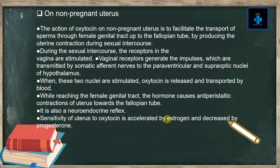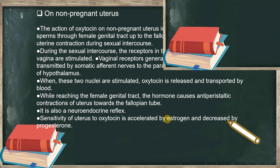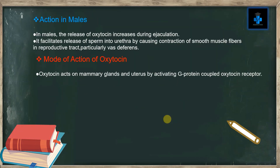The sensitivity of the uterus to oxytocin is increased by estrogen and decreased by progesterone. In males, the release of oxytocin increases during ejaculation. It facilitates the release of sperm into the urethra by causing contraction of smooth muscle fibers in the reproductive tract, particularly the vas deferens.